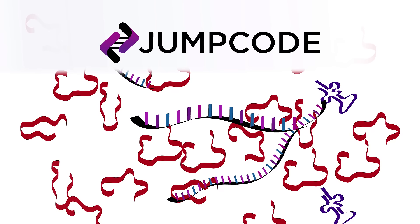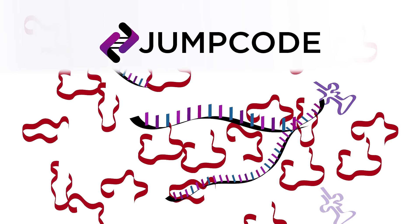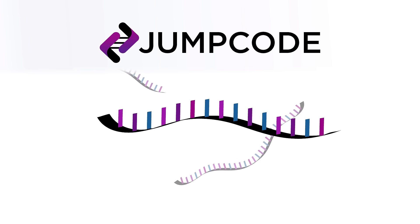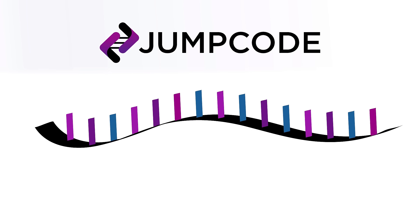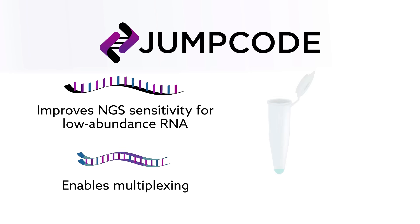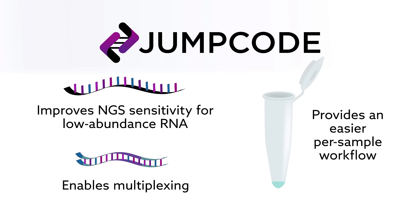JumpCode's technology lets you focus your sequencing capacity on the RNA that matters, saving time and money, and homing in on RNA that might otherwise escape detection. JumpCode improves the sensitivity of NGS for low-abundance RNA. It enables multiplexing and provides an easier, per-sample workflow.